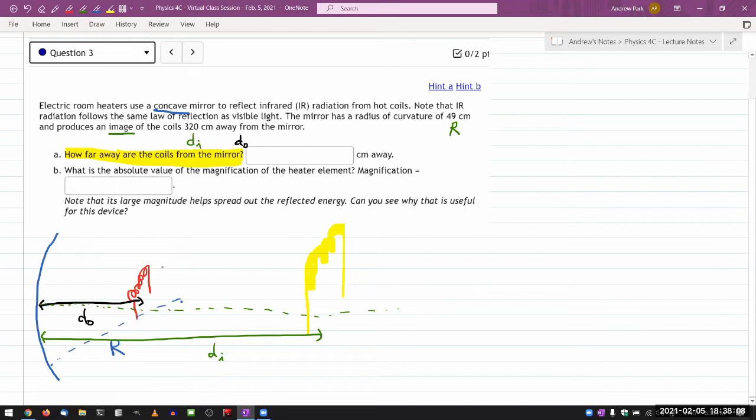So I'm going to assume that there's a real image of that coil somewhere here. And that's my image distance. So the infrared light from this heating coil gets focused by this converging mirror. If we could see infrared light, it would look something like this. And that's the basic setup.